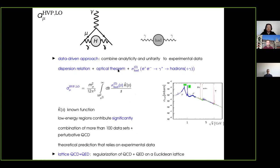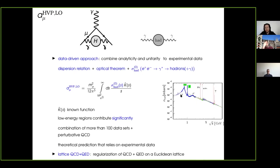In order to compute this, you can use basic properties of the theory. You can use analyticity to rewrite these diagrams in terms of dispersion relations which depend on the imaginary part of the diagram. Then you can use unitarity to apply the optical theorem to rewrite these in terms of the cross section of e+ e− into hadrons. In that way, you can write a_mu HVP leading order in terms of the dispersive integral of the cross section of e+ e− into hadrons — transforming the problem of computing non-perturbative effects into summing over experimental data of this cross section.